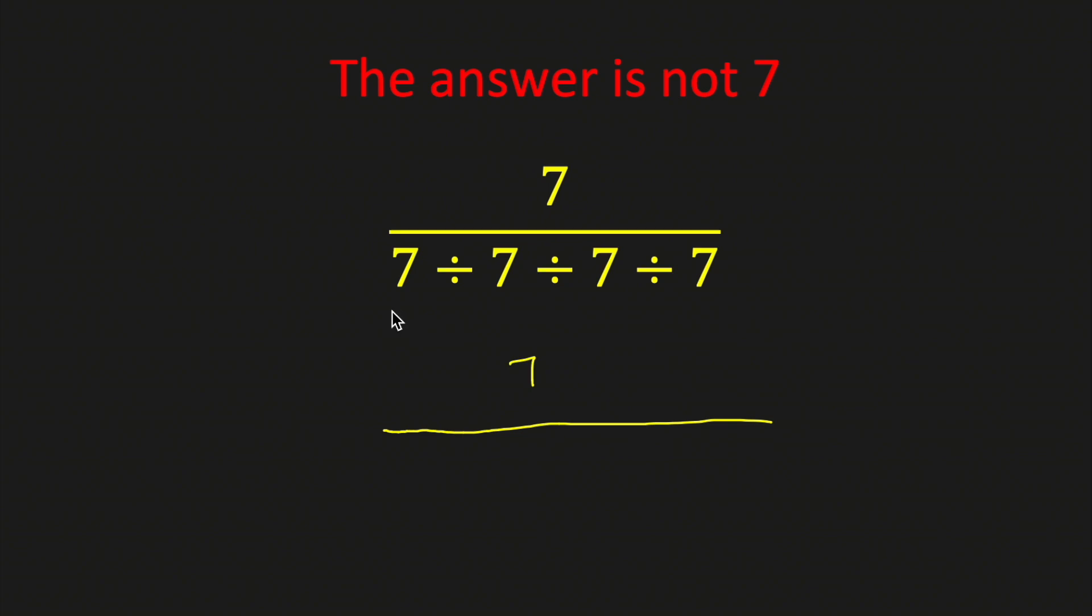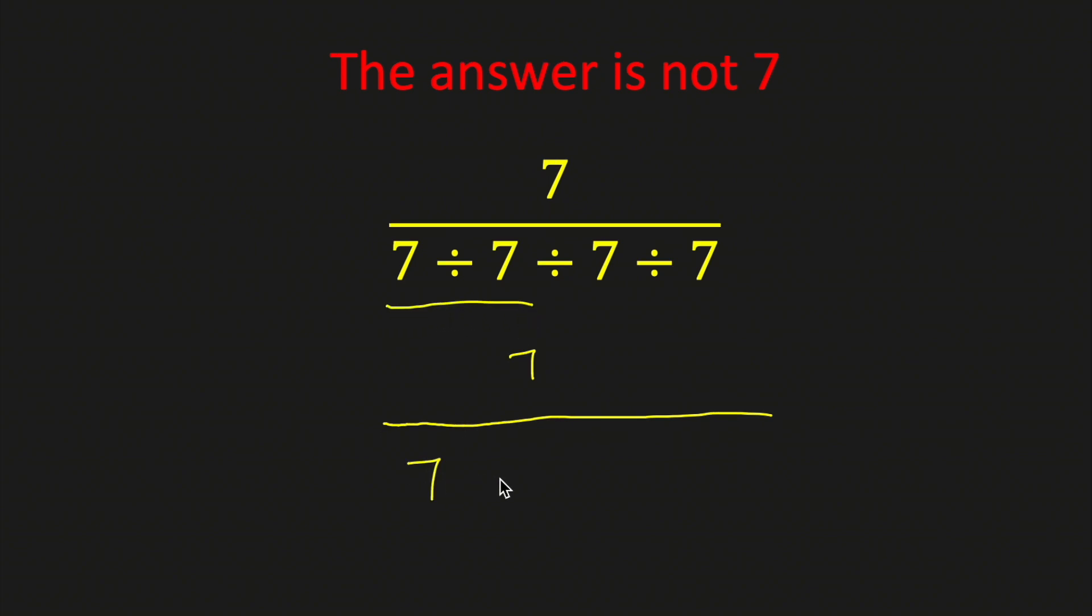So we'll first evaluate 7 divided by 7. We'll write this as 7 times the reciprocal of 7, which is 1 over 7.